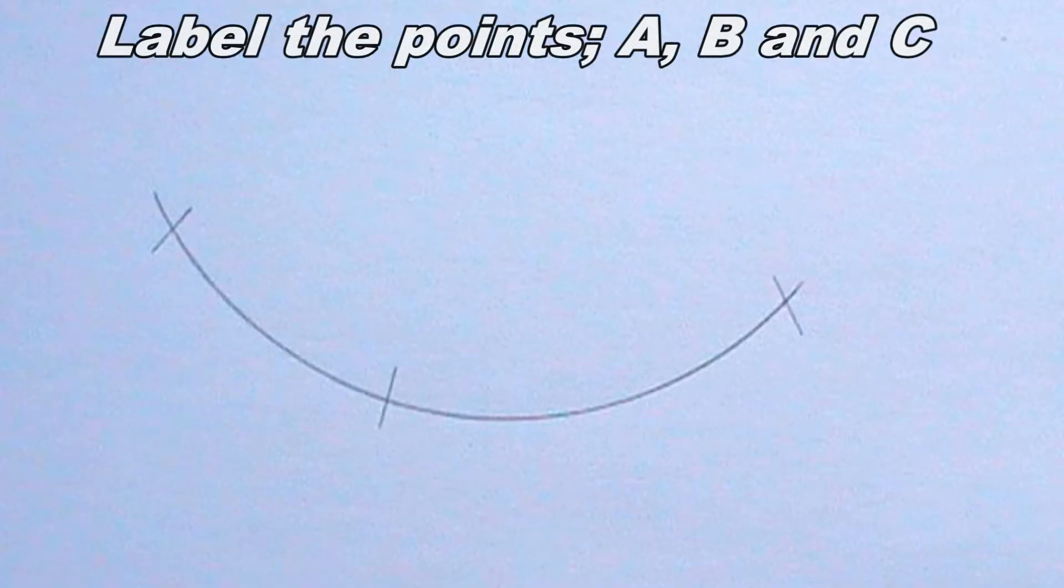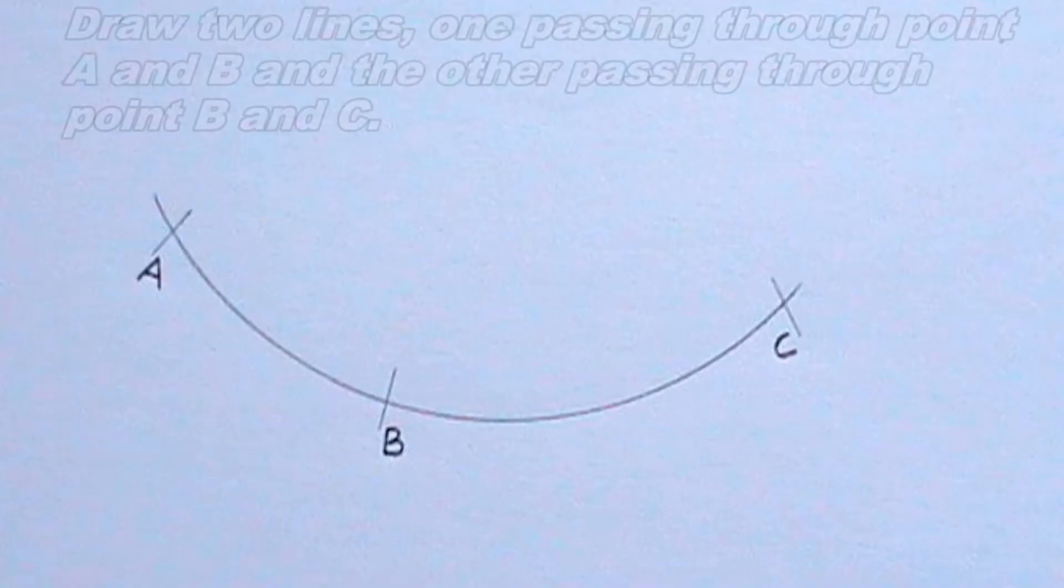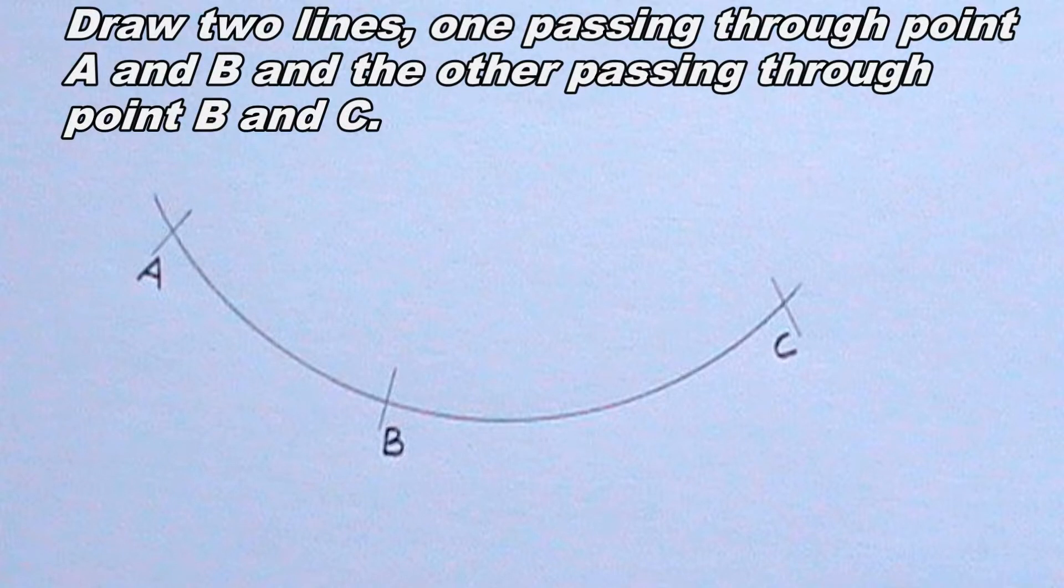I will label the point A, B and C. I will draw two lines, one passing through point A and B and the other passing through point B and C.